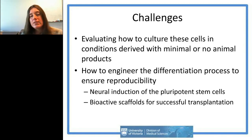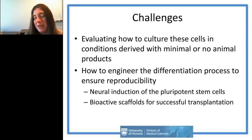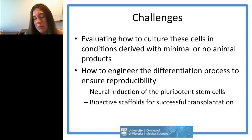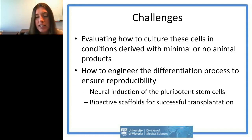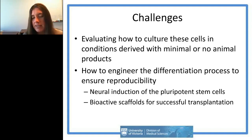Now I'll move on to how we take what we've learned from mouse studies and translate it into human work. One big challenge is that you can't just grow human cells on mouse feeder layers — it's not advisable to grow them in animal products for several reasons. The challenge is also making the differentiation process more reproducible so we can potentially take these therapies to the clinic. I'll cover culture conditions, neural induction, and bioactive scaffolds.